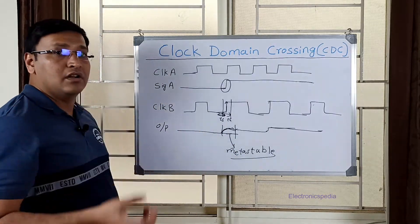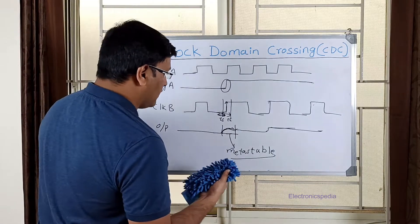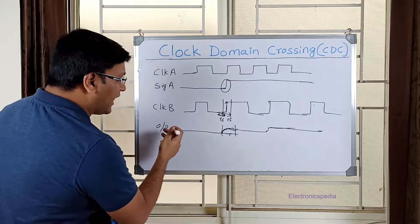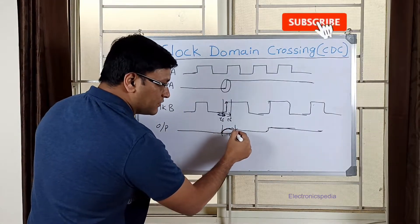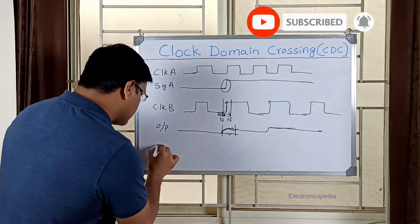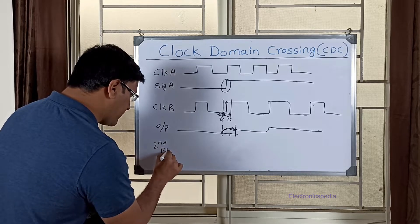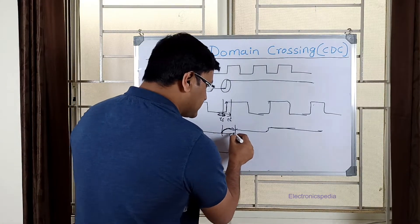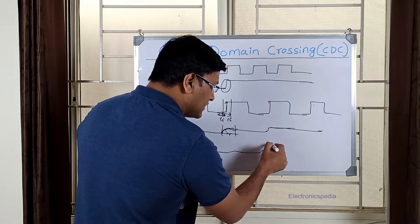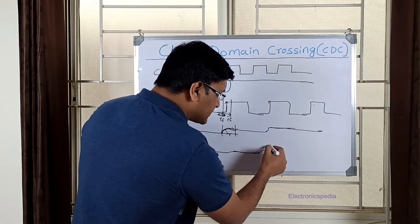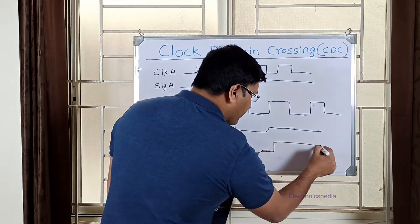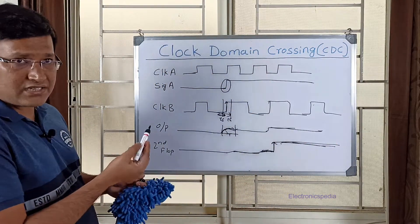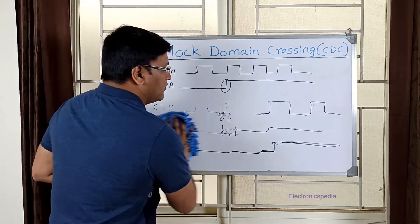Now I'll explain how to handle such metastable states by using a two-flop synchronizer or dual synchronizer. Instead of one flop, I will add one more flop — the output of the first synchronizer flop is fed into a second flop. In the second flop, even though the first flop has gone into a metastable state, the signal will be sampled properly and will have a stable value.